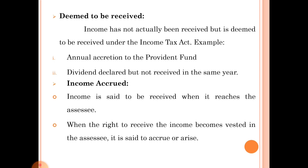An example of deemed to be received income is the annual accrual to the provident fund — that is, the annual increase in the provident fund, which may be in terms of interest. Another example: dividend declared but not received in the same year. The dividend is declared for the year but not received in the same year; it will be received in the next year, but it relates to the previous year. That type of dividend is taxed in the previous year itself, because it is already declared. That type of income is known as deemed to be received.